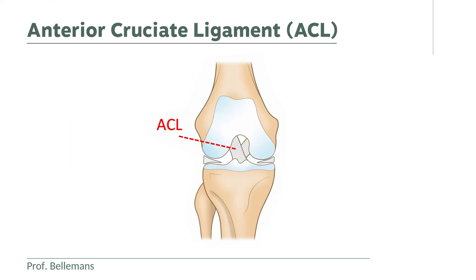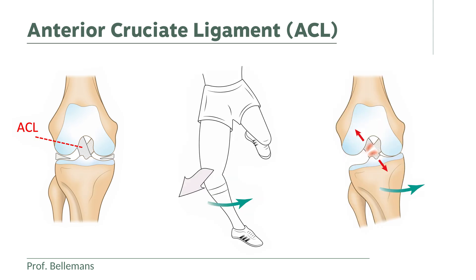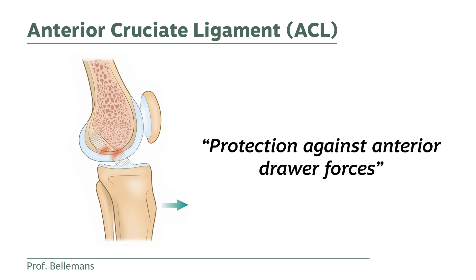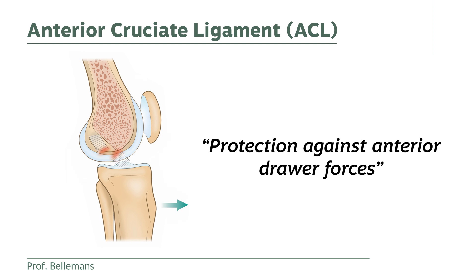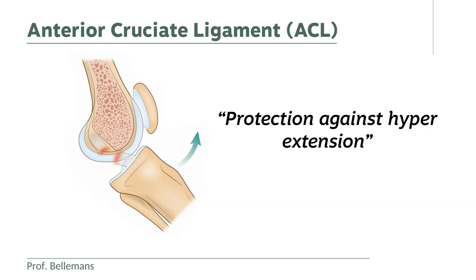The ACL protects the knee against rotation, like in a pivoting motion, or during a sudden change in direction while the foot is still planted on the ground and all the rotation is imposed onto the knee. But the ACL also protects against anterior drawer forces — forces that pull the tibia forward — and also against hyperextension of the knee.